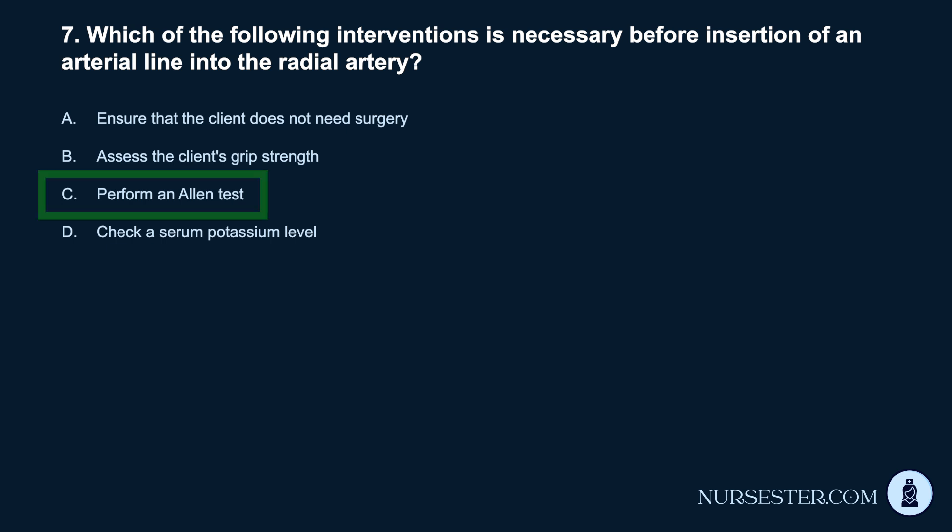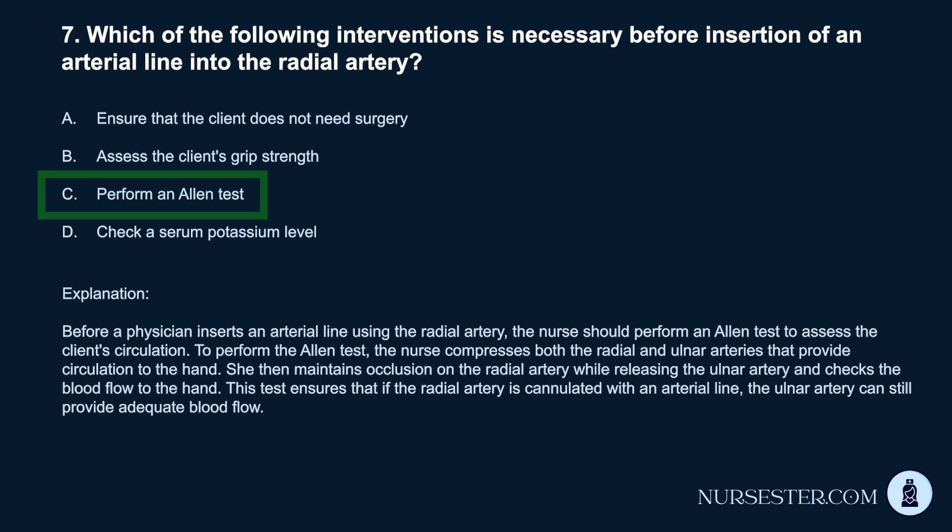Correct answer: C. Perform an Allen test. Before a physician inserts an arterial line using the radial artery, the nurse should perform an Allen test to assess the client's circulation. To perform the Allen test, the nurse compresses both the radial and ulnar arteries that provide circulation to the hand, then maintains occlusion on the radial artery while releasing the ulnar artery and checks blood flow to the hand. This ensures that if the radial artery is cannulated, the ulnar artery can still provide adequate blood flow.